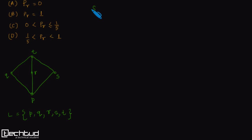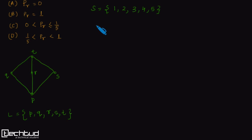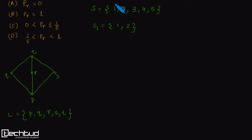Consider a set S which consists of elements 1, 2, 3, 4, and 5. We can construct a new set from this given set by performing some basic operation. For example, set S1 which has elements 1 and 2 is created by taking two of the elements of set S — elements 1 and 2 — and we also call this a subset of S.